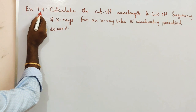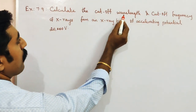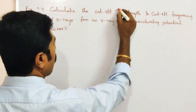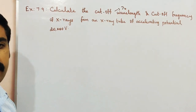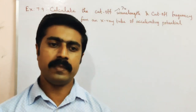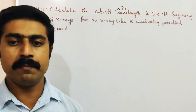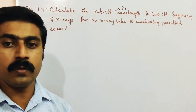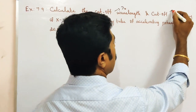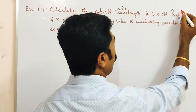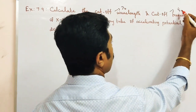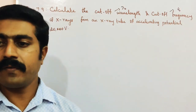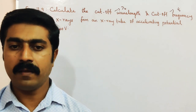7th lesson, Example 7.9: Calculate the cutoff wavelength. The cutoff wavelength notation is lambda naught (λ₀), otherwise called threshold wavelength — it is the minimum wavelength. Cutoff frequency notation is nu naught (ν₀), otherwise called threshold frequency.